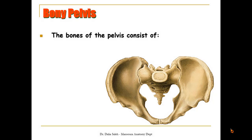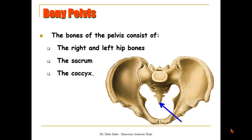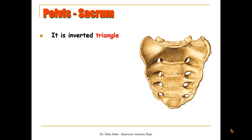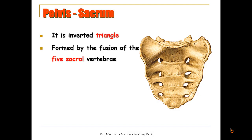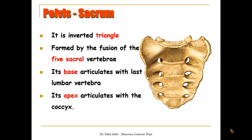The bones of the pelvis consist of the right and left hip bones, the sacrum, and the coccyx. The sacrum is an inverted triangle formed by fusion of the five sacral vertebrae. Its base articulates with the lumbar vertebrae, while its apex articulates with the coccyx.